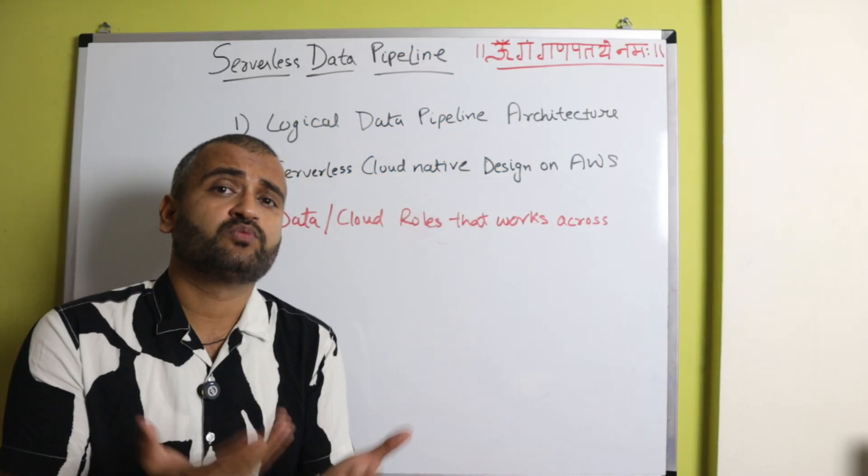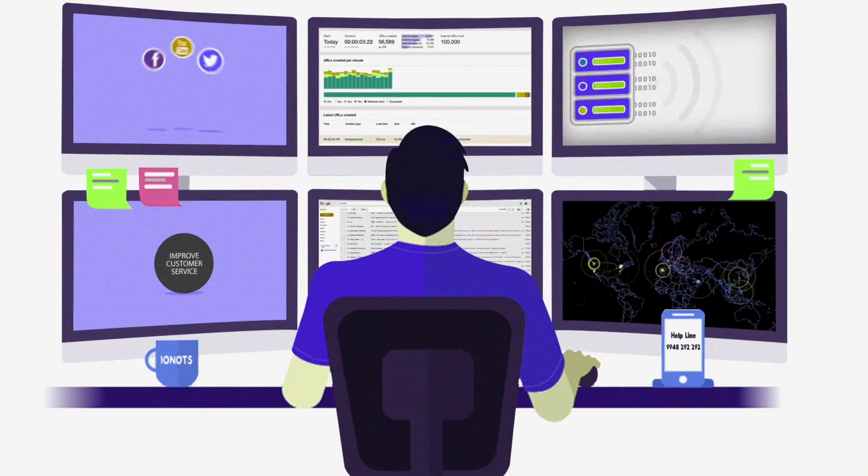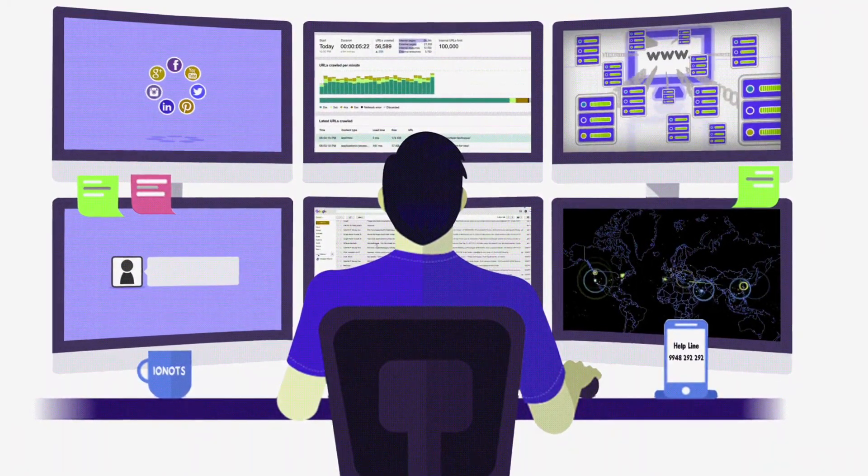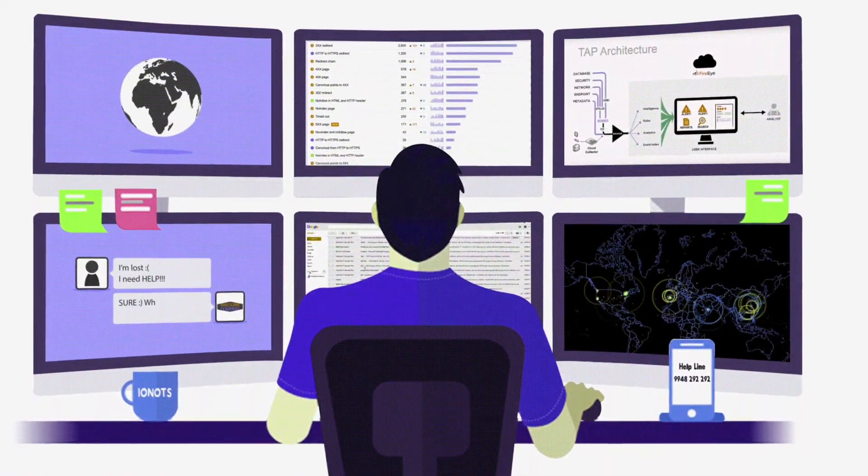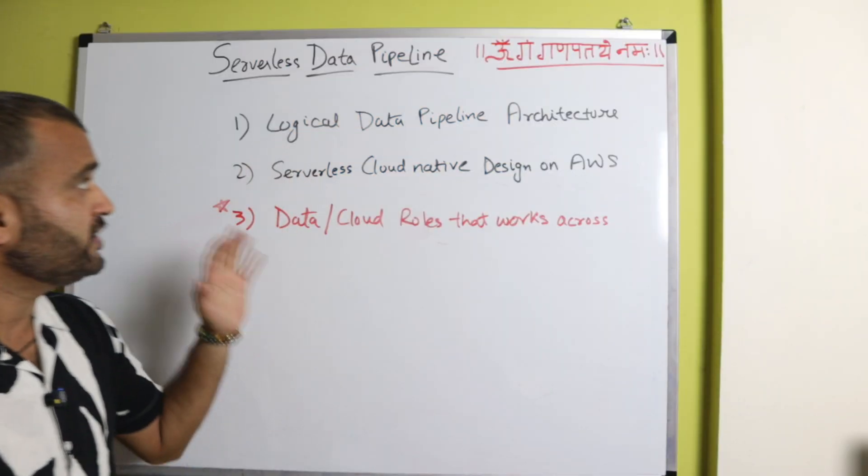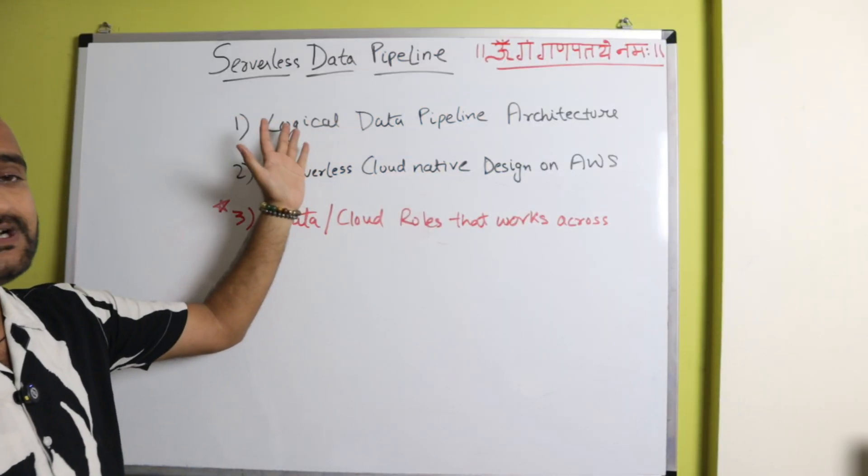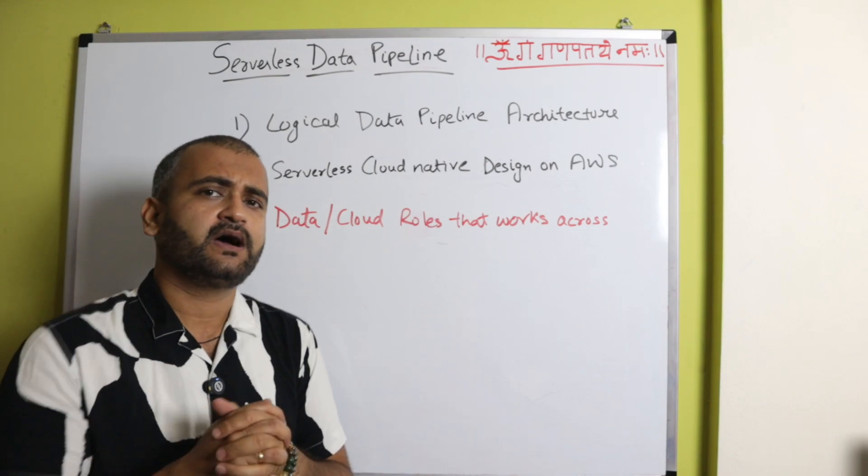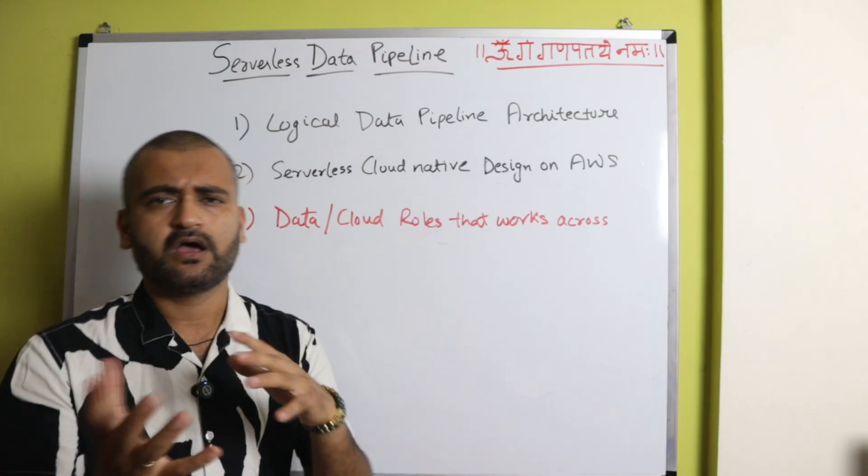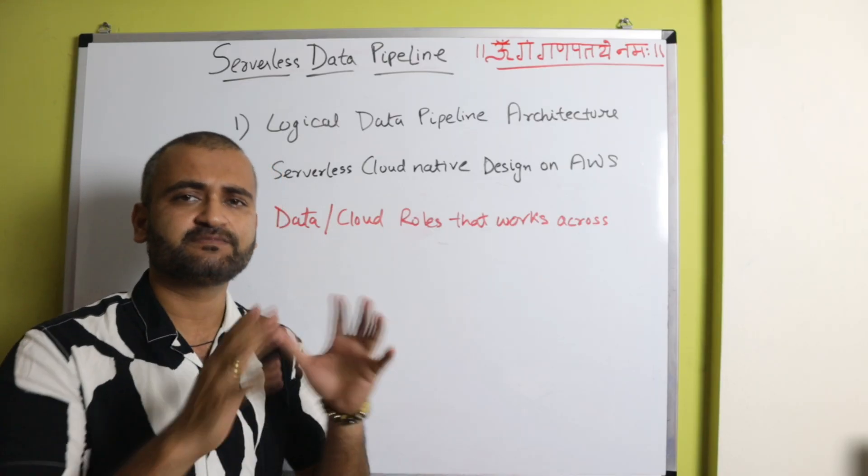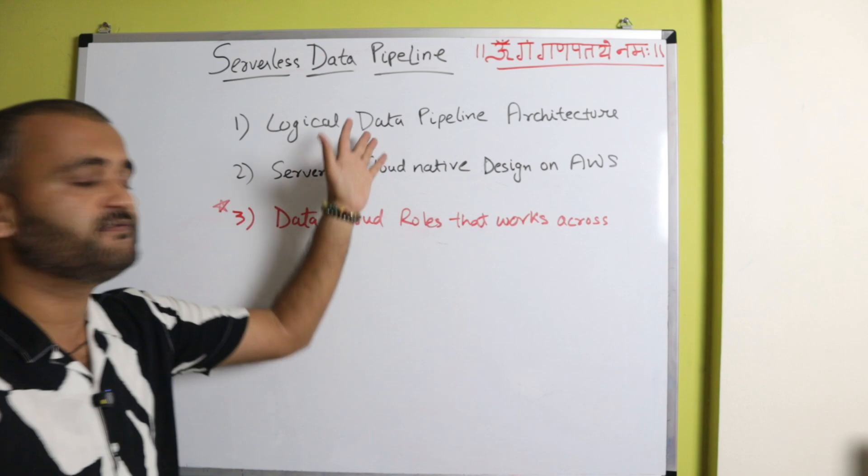And that is what is required because you need the pipelines to be deployed quickly so that the data starts flowing, and we start to get good insights from that data. So in this video, we'll talk about the logical data pipeline architecture. This architecture is common across any platform. Like whenever you are deploying a data pipeline, you need this kind of an architecture. You can mix and match, you can make changes. But this is a kind of a reference architecture we will talk about.